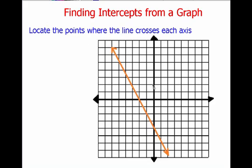So now we can find the intercepts from a graph. Now this should seem pretty obvious, pretty easy to everybody. Finding the intercepts from the graph is as simple as locating the points where the line crosses each axis. Or, to put it a little more simply, look at the graph. All you have to do is look at the graph and see where it crosses the x-axis here and where it crosses the y-axis here.